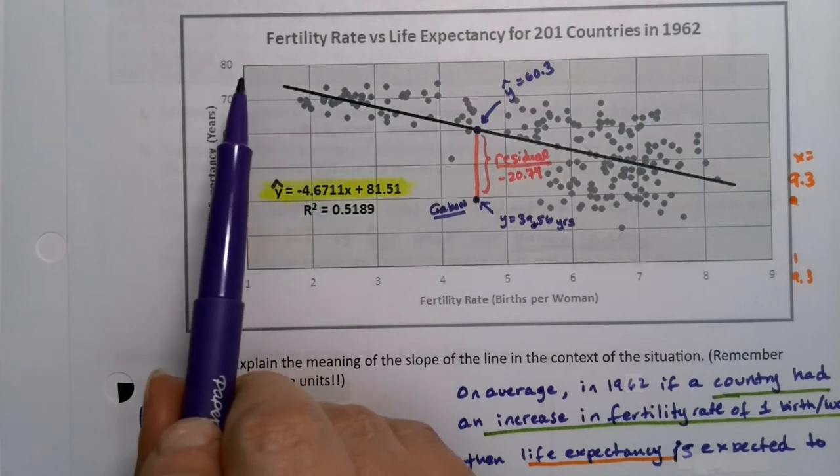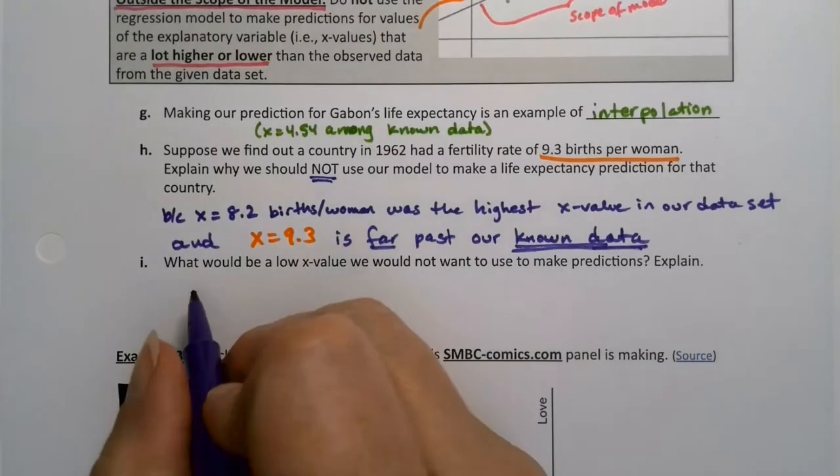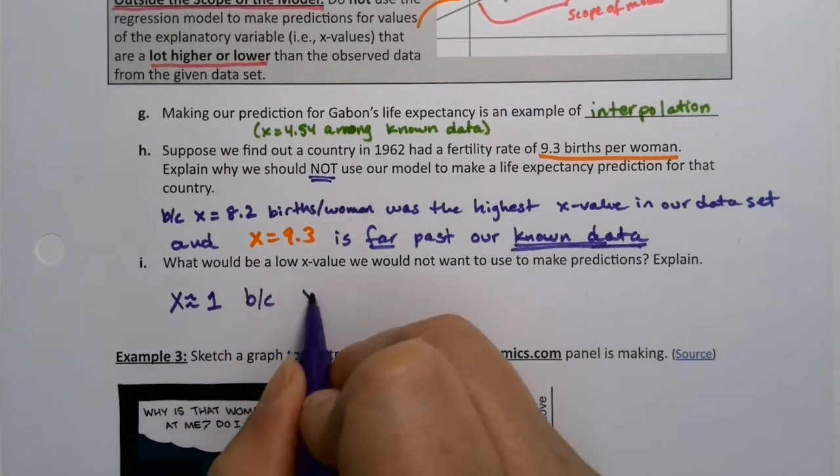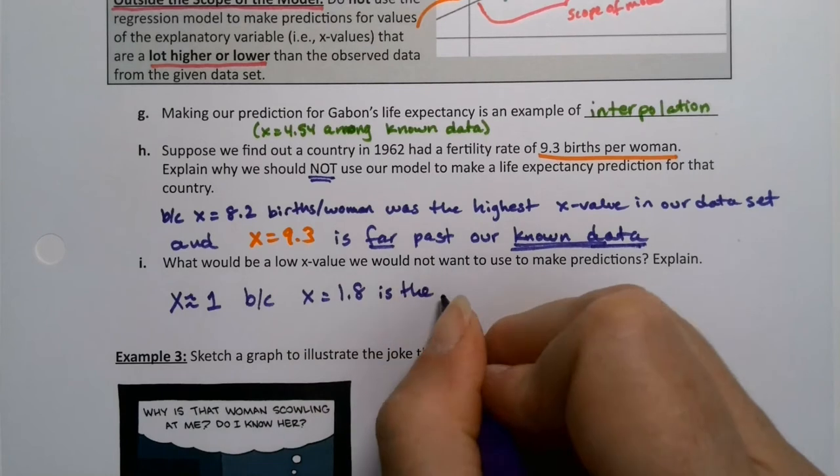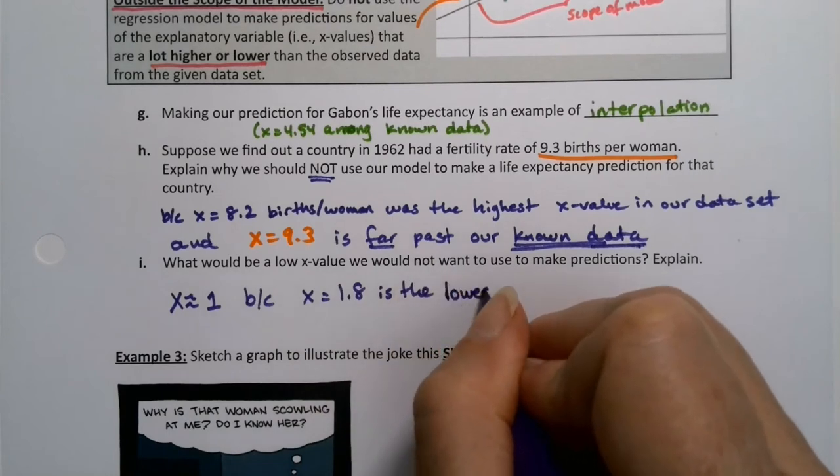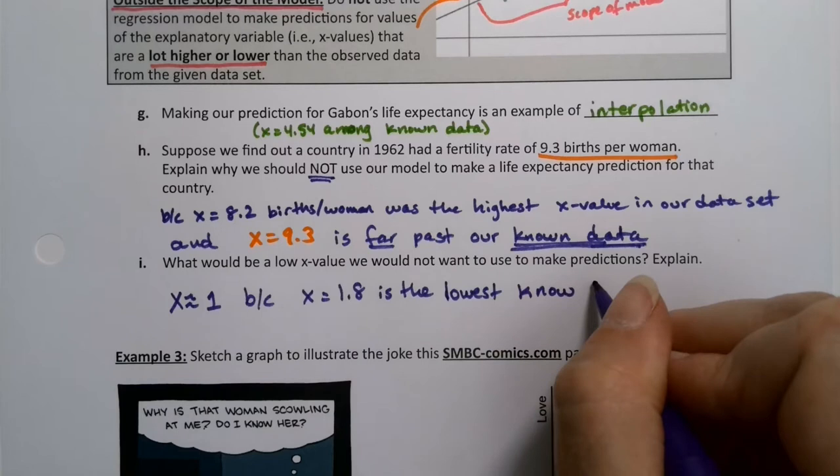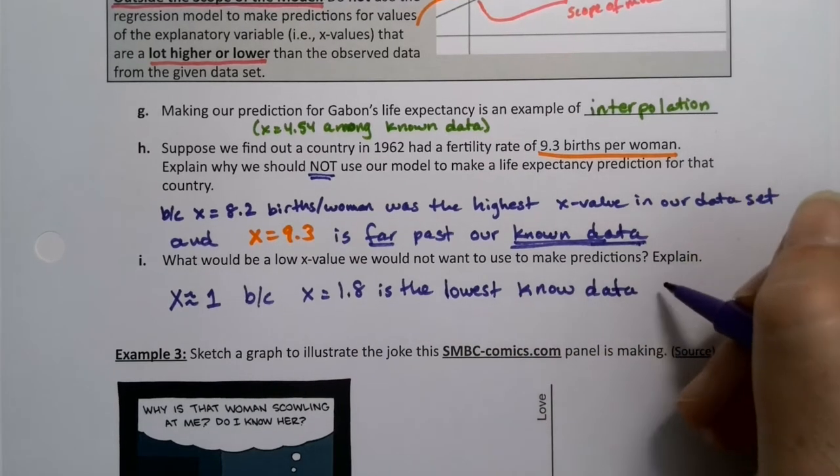We have nobody over here. So it's a judgment call. But I would say x is about 1 because x equals about 1.8 is the lowest known data value. And that might not seem like a big difference, but it is for our country. And you can see because it's so far away on the graph.